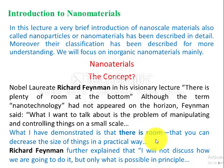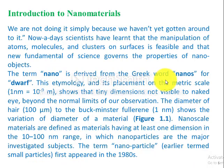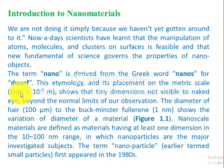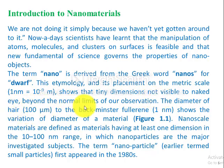The term 'nano' is derived from the Greek word 'nanos,' which means dwarf. In daily life, this word is used for people who are shorter in their length. Its placement on the metric scale shows that one nanometer is equal to 10 raised to the power of minus 9 meters, indicating tiny dimensions not visible to the naked eye and beyond the normal limits of our observation.